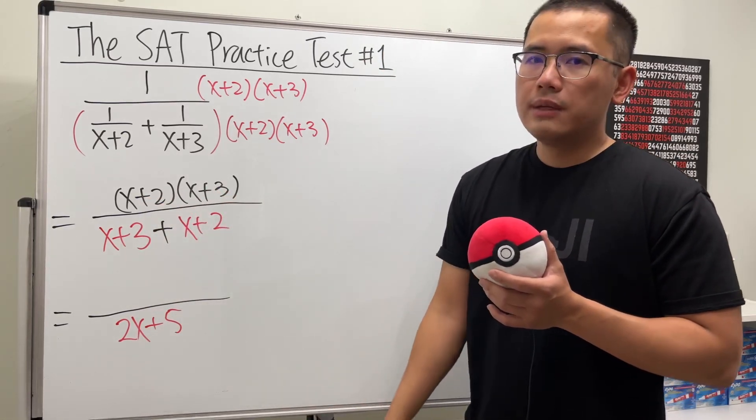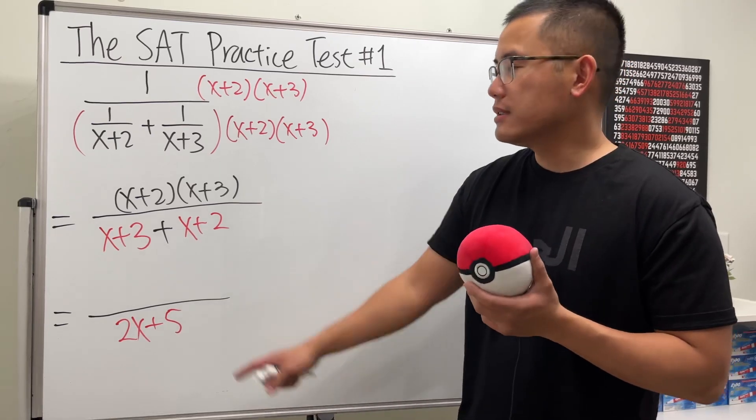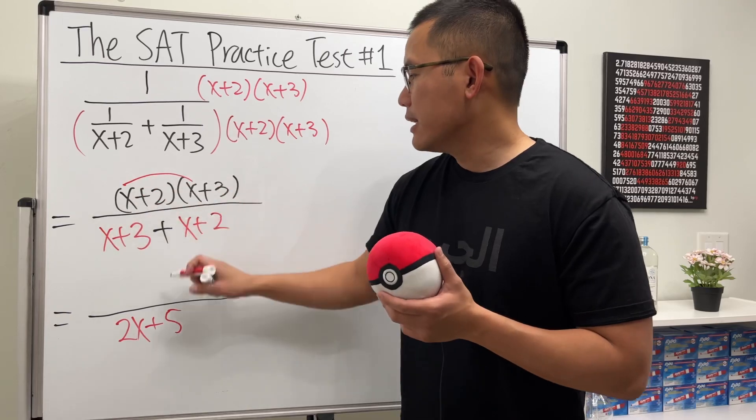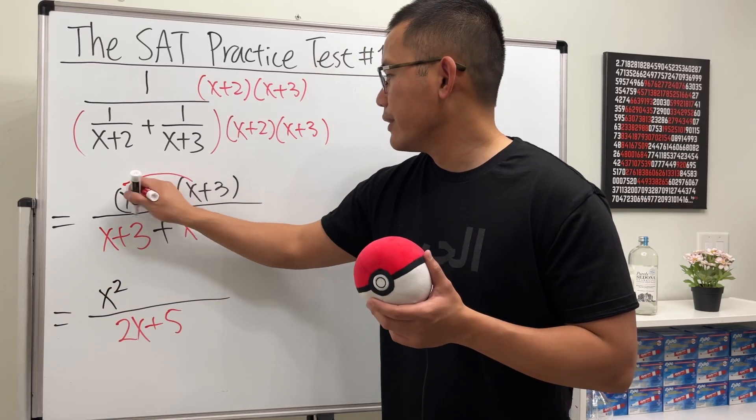If you look at the answer choices, they want us to multiply this out, so we will. x times x is x squared, and then x times 3 is 3x.